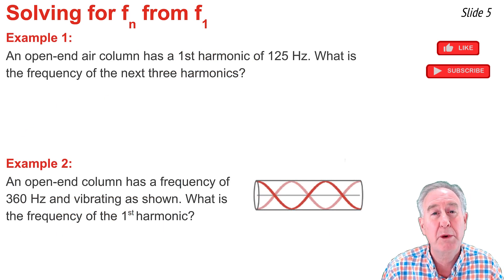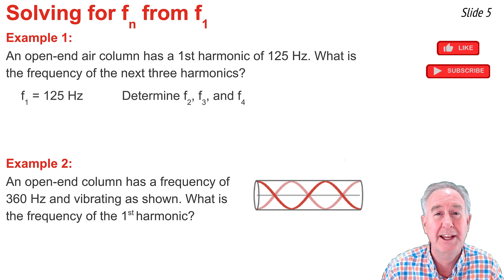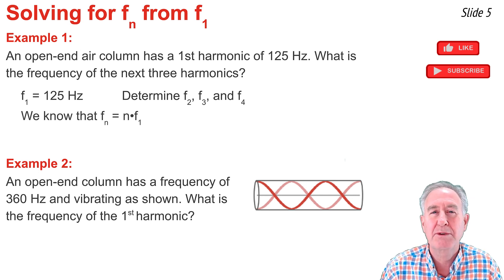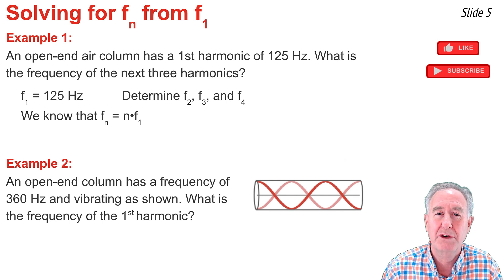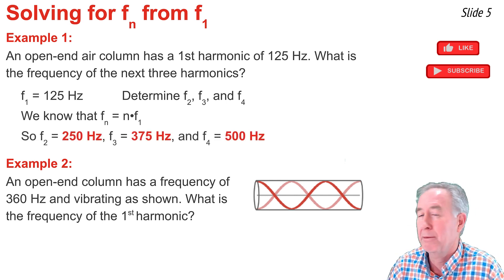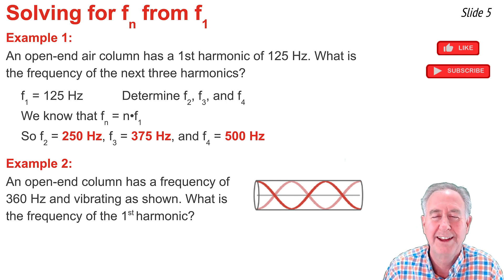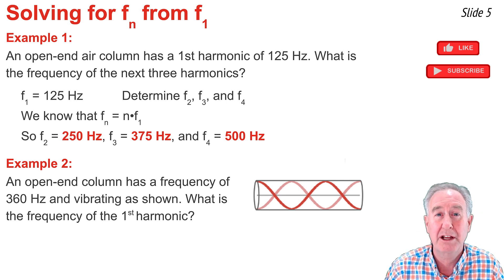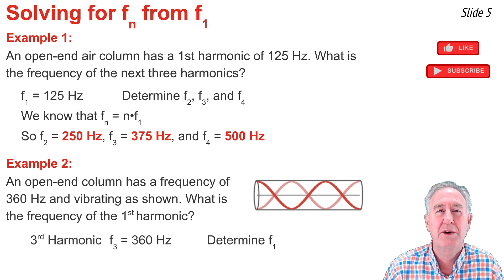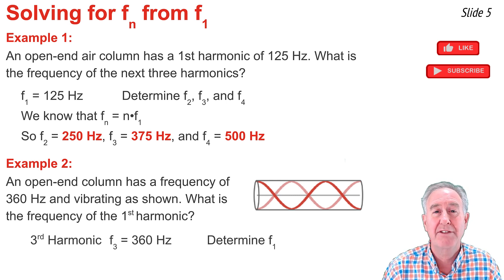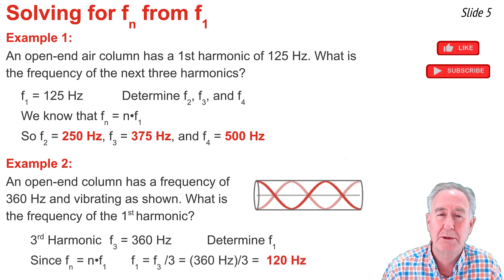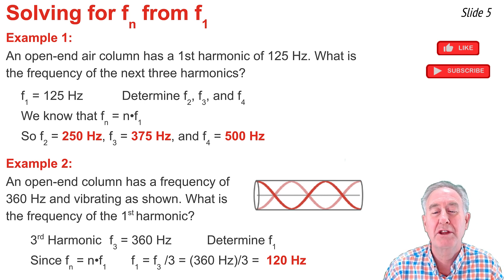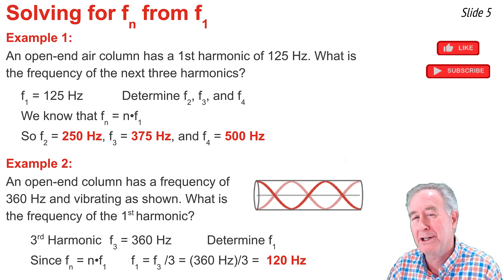In Example 1, I begin by writing down what I know: the frequency of the first harmonic is 125 Hz. Since fn = n × f1, I can find the frequency of the second, third, and fourth harmonic by multiplying by 2, 3, and 4. In Example 2, I'm given the standing wave pattern for what looks like the third harmonic, and I know its frequency is 360 Hz. Since fn = n × f1, f1 = fn / n, so f1 = 360 / 3 = 120 Hz.